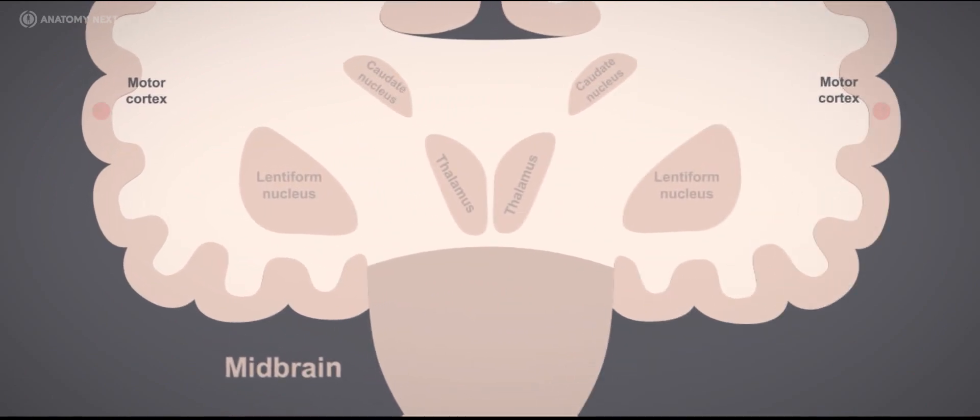The oculomotor nuclei receives information from neurons located in the motor cortex, in this case, from the motor neurons located in the middle frontal and inferior frontal gyrus. This area is cytologically classified as Brodmann area 8.